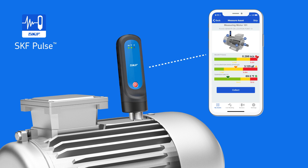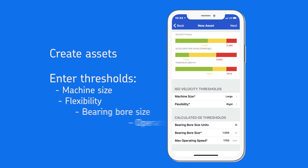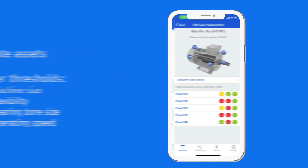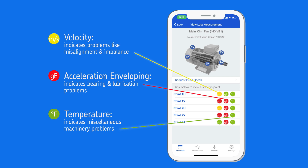The portable sensor moves with you from machine to machine, acting as a smart vibration tool. The app allows users to create asset profiles and select industry standard or customized thresholds to measure those assets. This makes interaction and inspection more personalized and easier than ever. Operators can instantly see the health of a machine via intuitive green, yellow, and red indicators that highlight potential problems.